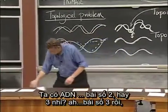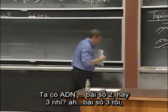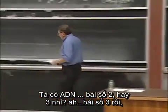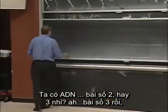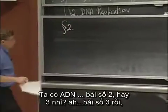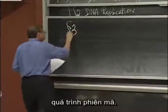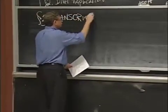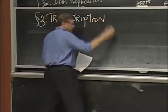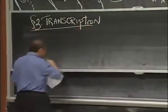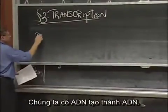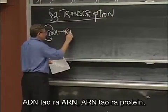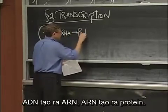So we've got DNA. We have DNA goes to DNA. DNA makes RNA. RNA makes protein.